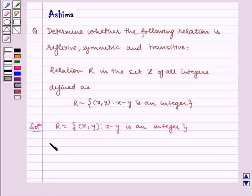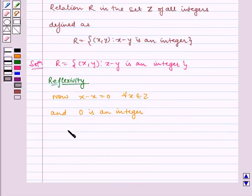Let's check for reflexivity. Now, x minus x equals 0 for all x belongs to Z and 0 is an integer. Therefore, R is reflexive.